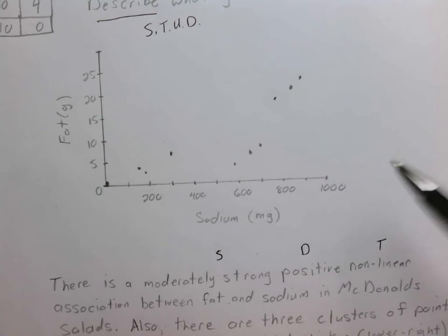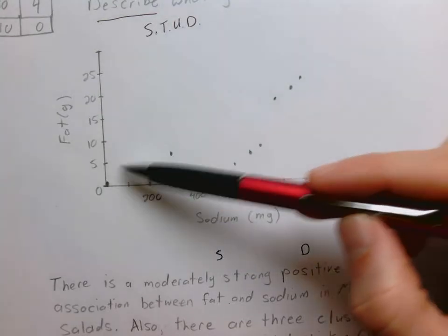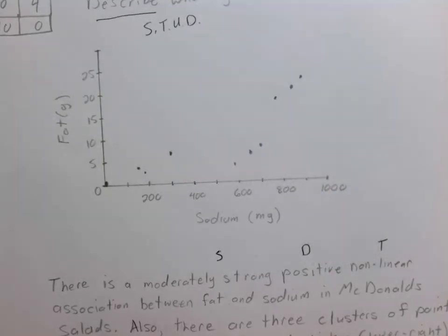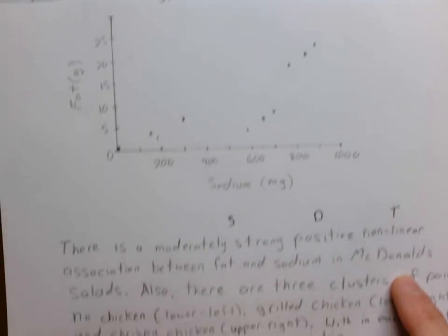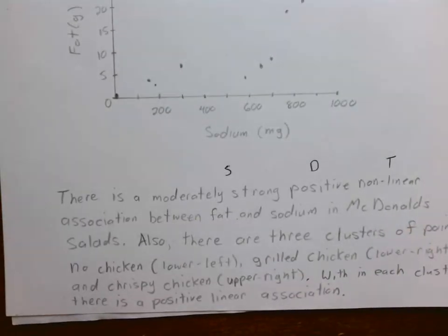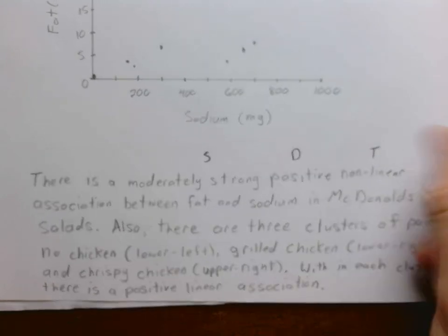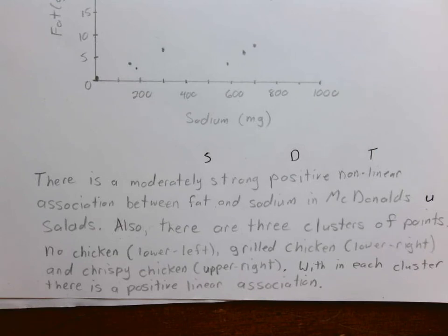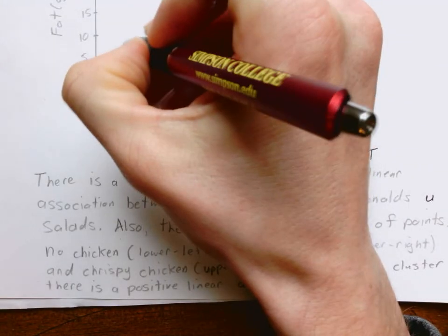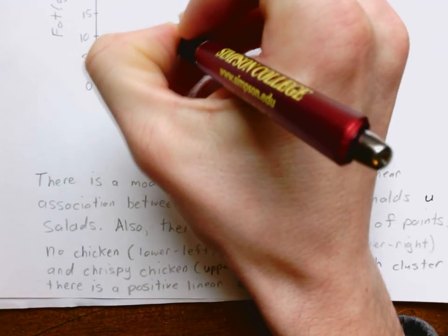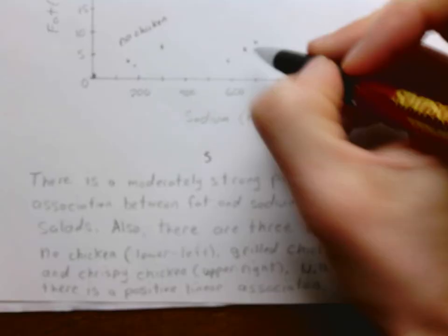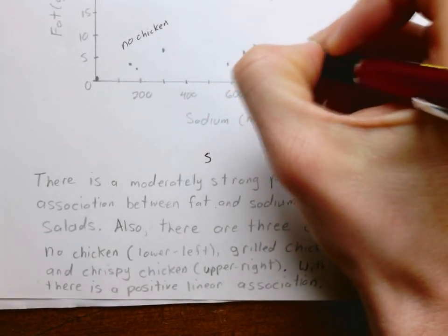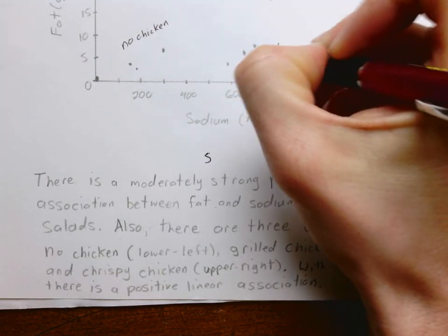For the unusual features, we can see that there are some clusters here. We have a cluster of three dots here, a cluster of three dots here, and a cluster of three dots there. In your table on the notes you will see that there are different varieties of chicken. So for our unusual features, we're going to discuss all of those clusters. In the lower left-hand side we have those with no chicken. Then in the lower right-hand side we have the grilled chicken. And finally we have our crispy chicken.